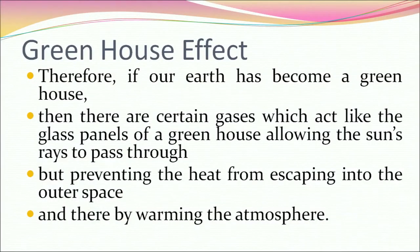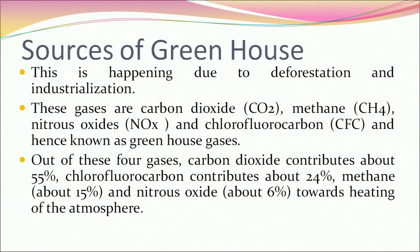If our earth has become a greenhouse, then there are certain gases which act like the glass panels of a greenhouse, allowing the sun's rays to pass through but preventing heat from escaping into outer space, thereby warming the atmosphere. This is happening due to deforestation and industrialization. These gases are carbon dioxide, methane, nitrous oxides and chlorofluorocarbons, known as greenhouse gases. Out of these four gases, carbon dioxide contributes about 55%, chlorofluorocarbons about 25%, methane about 15%, and nitrous oxide about 6% towards heating of the atmosphere.